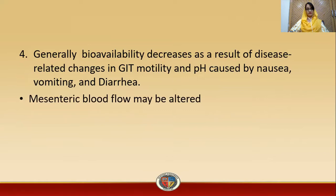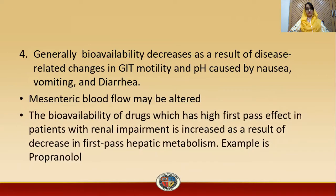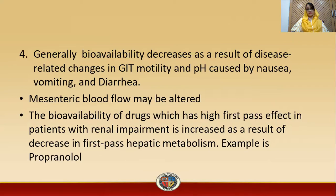Mesenteric blood flow may also be altered. The bioavailability of drugs with a high first-pass effect in patients with renal impairment is increased as a result of a decrease in first-pass hepatic metabolism. Due to reduced hepatic first-pass effect, free drug concentration in the blood is increased, leading to higher bioavailability. An example of such a drug is propranolol.